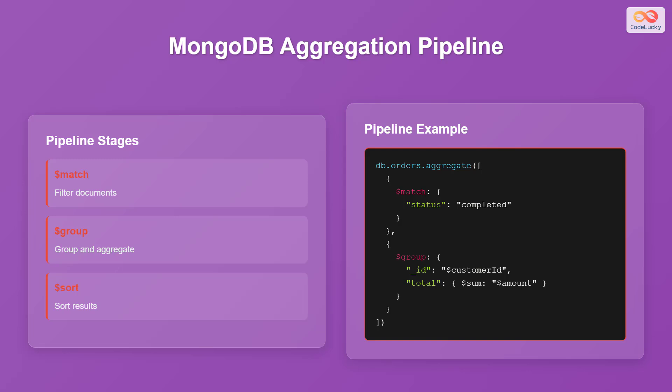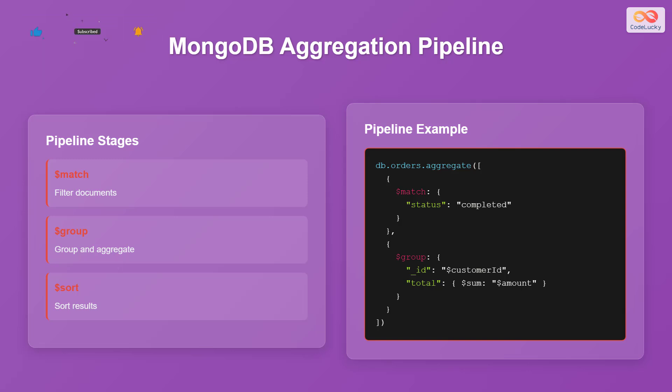Let's examine the aggregation pipeline, which is a powerful framework for data processing in MongoDB. The pipeline consists of several stages, each performing a specific operation on the data. The match stage filters documents based on specified criteria. The group stage groups documents by a field and applies aggregation functions. The sort stage sorts the results. As an example, the db.orders.aggregate method can be used with the match operator to filter orders with a completed status, and with the group operator to group results by customer ID and calculate the total amount.